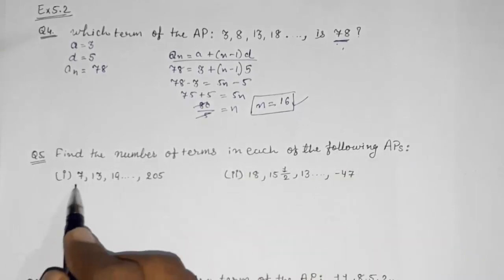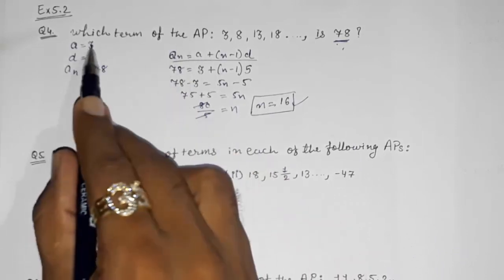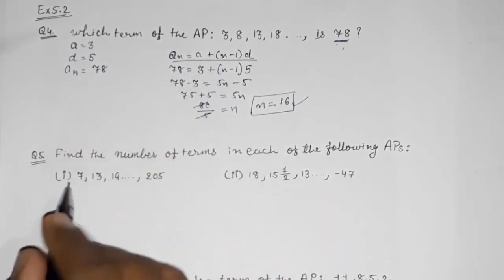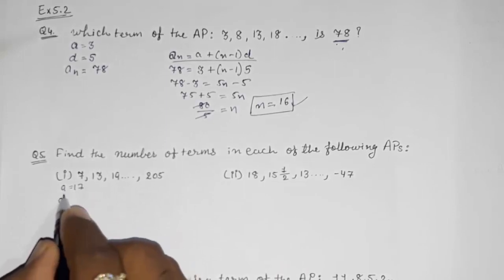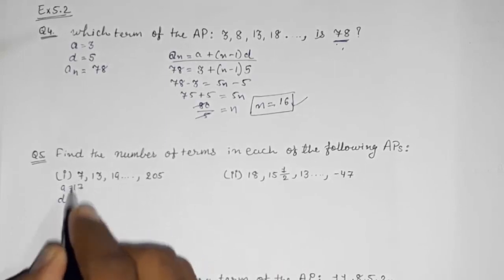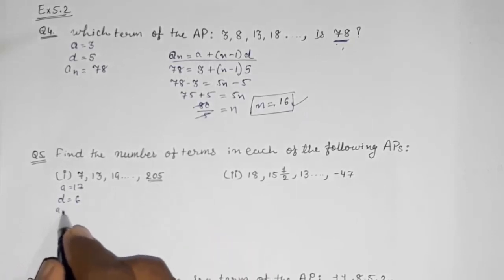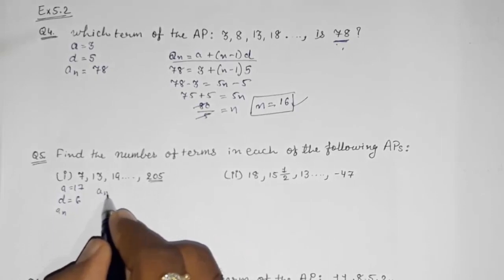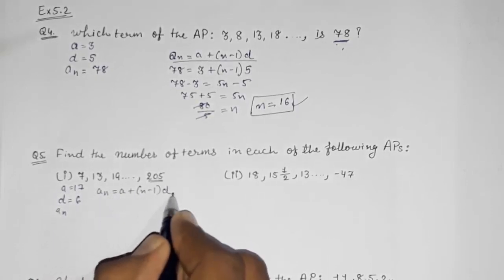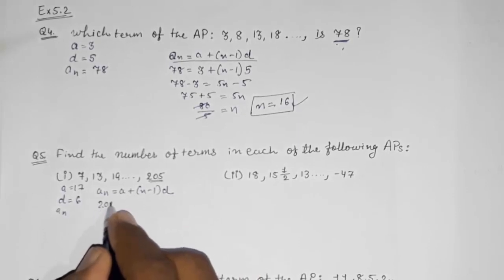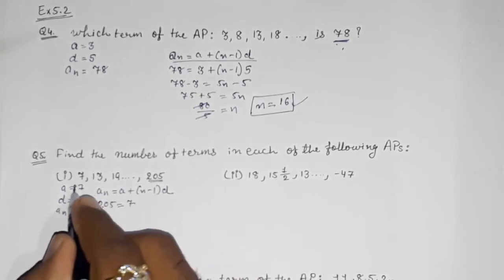Now moving toward question number 5: find the number of terms in each of the following APs. Two APs are given to us. For the first one, a = 7, d = 13 − 7 = 6, and the last term an = 205 is given. We want to find n using the formula an = a + (n − 1) × d.